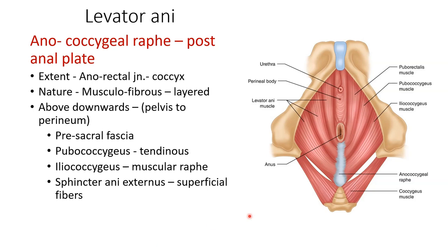The anococcygeal raphe, also known as the post-anal plate, extends from the anorectal junction to the coccyx. It is a muscular-fibrous structure that is layered. From above downwards, the layers are: the presacral fascia, the pubococcygeus part (which is tendinous), the iliococcygeus part (which is a muscular raphe), and the external anal sphincter, whose superficial fibers attach to this anococcygeal raphe. The components of the levator ani — puborectalis, pubococcygeus, iliococcygeus — and the coccygeus muscle can be revised in this picture.